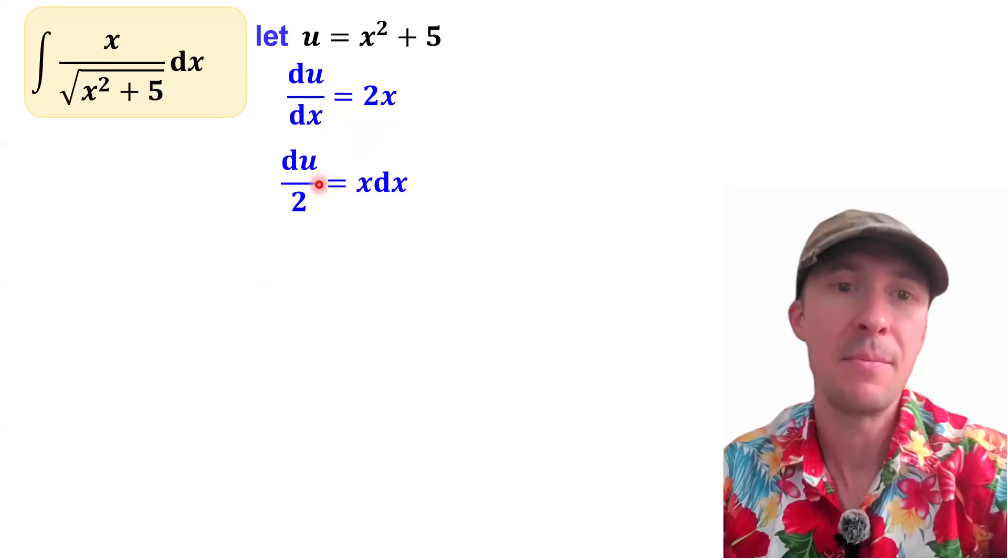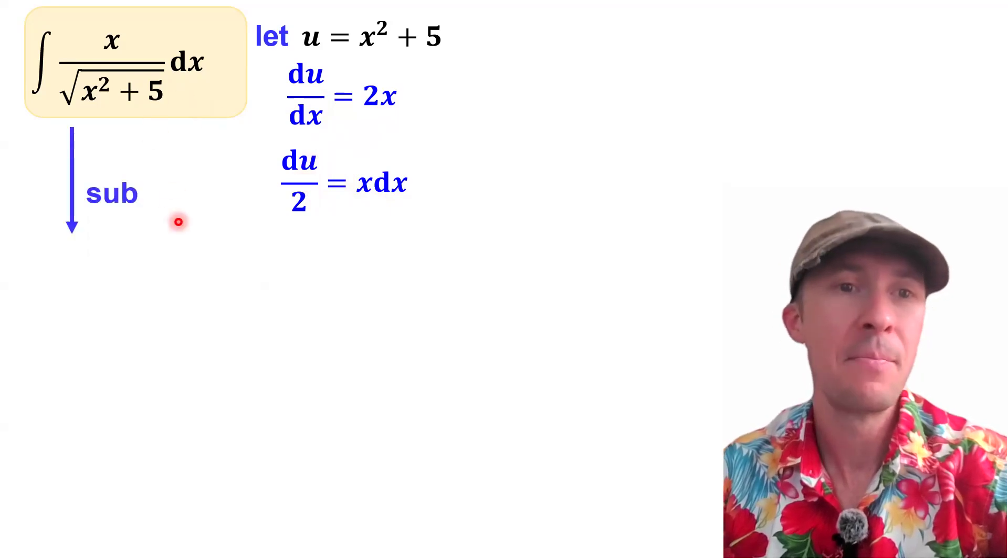Multiply both sides by dx divided by 2. Then x times dx equals du divided by 2. Do you see that? So we'll substitute that in and we'll substitute in what u is as well.